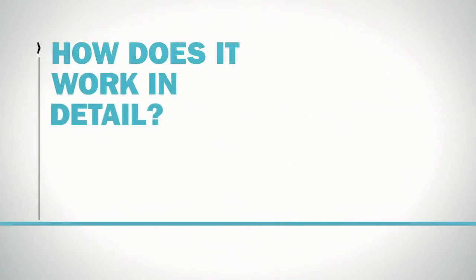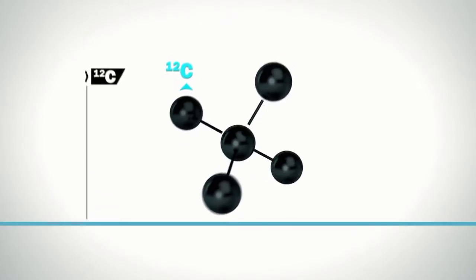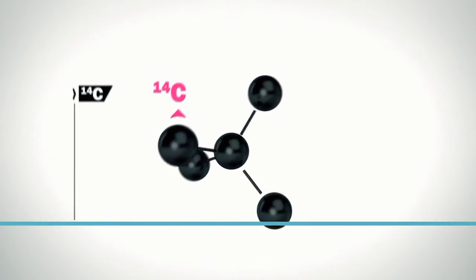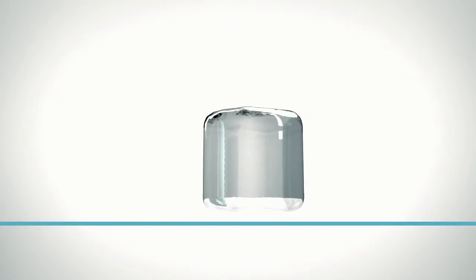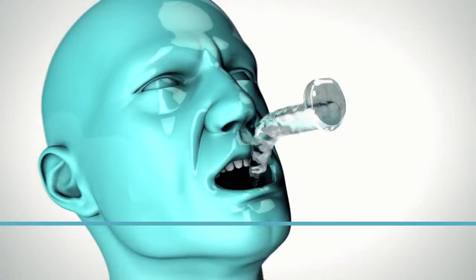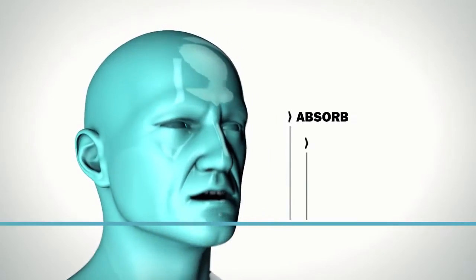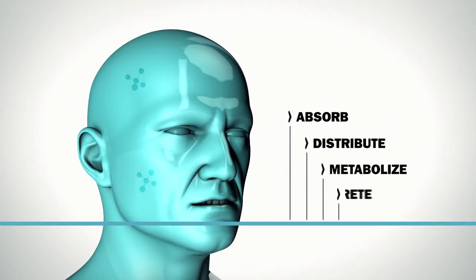How does it work in detail? First, we start with incorporating a label in the drug we want to test. An extremely low dose of the labeled drug is then prepared and administered to a volunteer, where it will be absorbed, distributed, metabolized, and finally excreted.